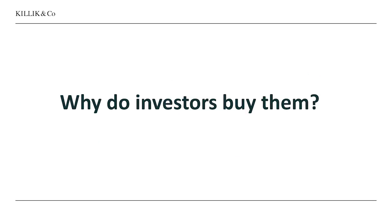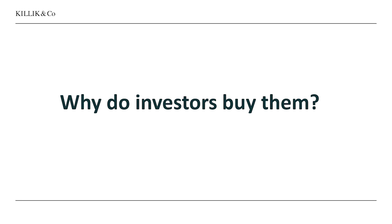Why do investors buy them? You might think this is crazy — why would someone essentially pay the government to borrow money from them? Well, government IOUs are seen as a very safe haven. You can also make a profit on the trade: although some people buy these IOUs and hold them through to redemption, others will try to trade them in the meantime for a profit. And some institutions have very little choice in terms of their asset allocation — they need to hedge out other exposures.